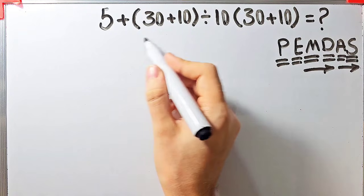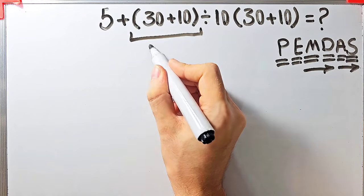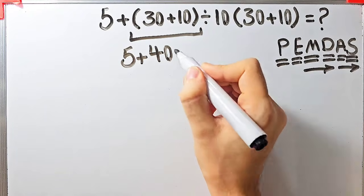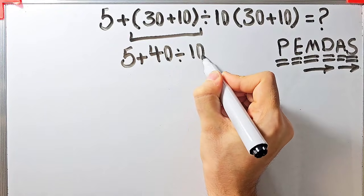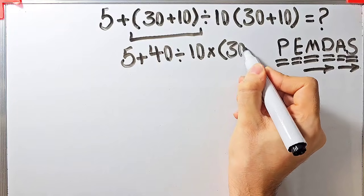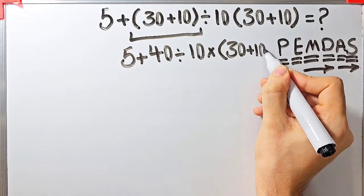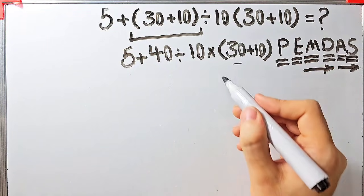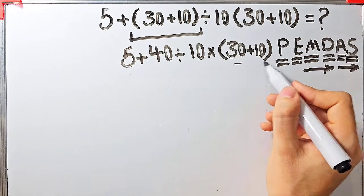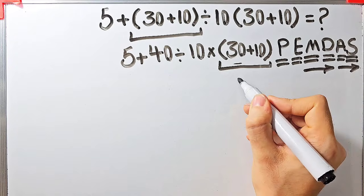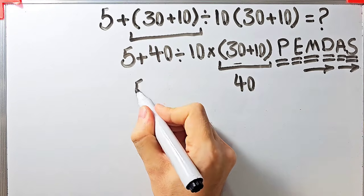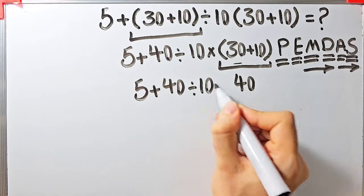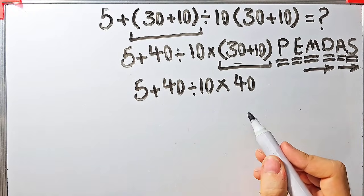According to the PEMDAS rule, first we simplify the parentheses: 30 plus 10 equals 40. Now the question is 5 plus 40 divided by 10, then times open parentheses 30 plus 10 close parentheses. We simplify those parentheses again: 30 plus 10 equals 40. Now the question is 5 plus 40 divided by 10, then times 40. We have addition, division, and multiplication.